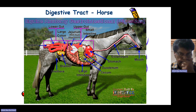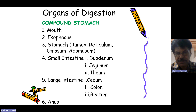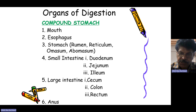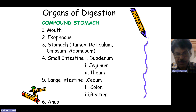The liver, spleen, gallbladder, and kidneys are present inside the abdominal cavity. The digestive system of the compound stomach animal depends on the mouth, esophagus, and then the compound stomach. These animals have four compartments in the stomach: the rumen, reticulum, omasum, and abomasum.